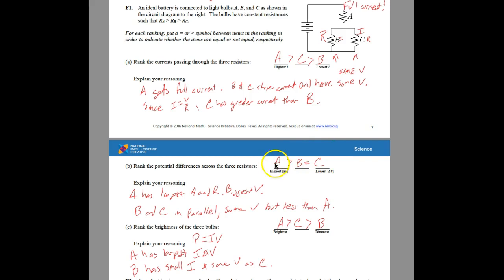A has the largest potential and also the largest resistance. B and C are in parallel, so they have the same voltage, but it is less than A.